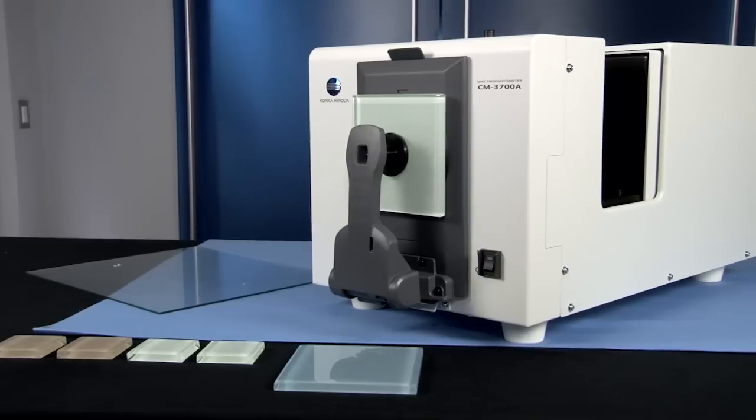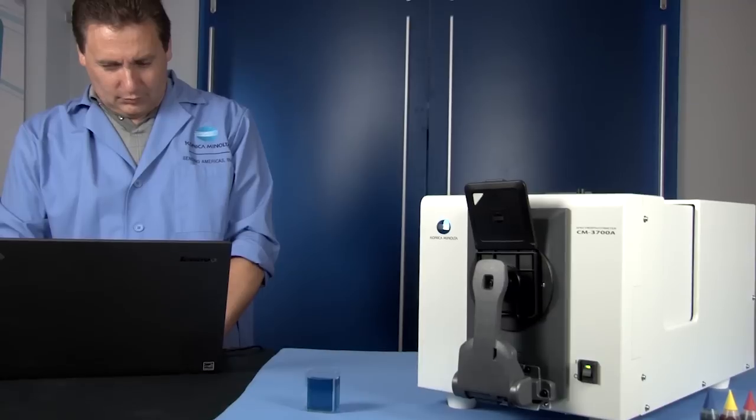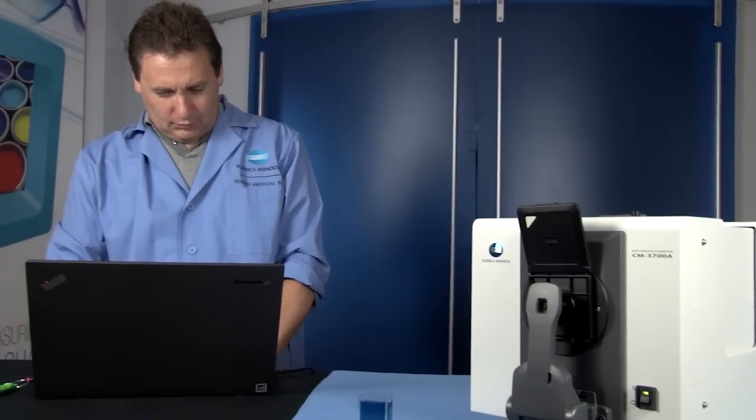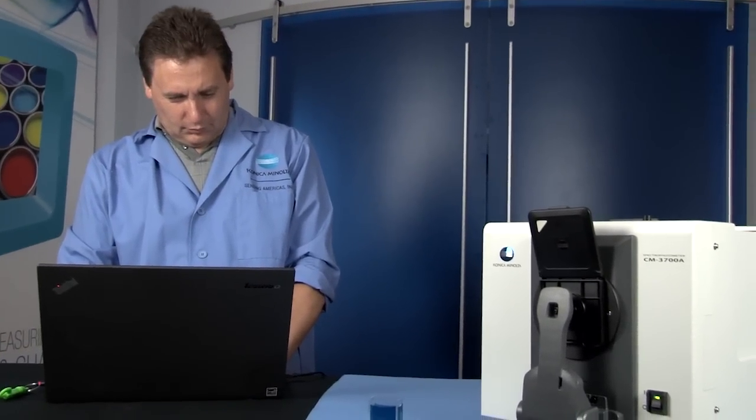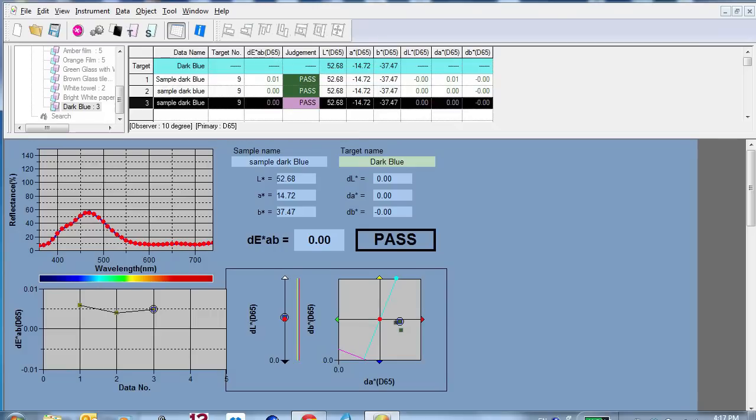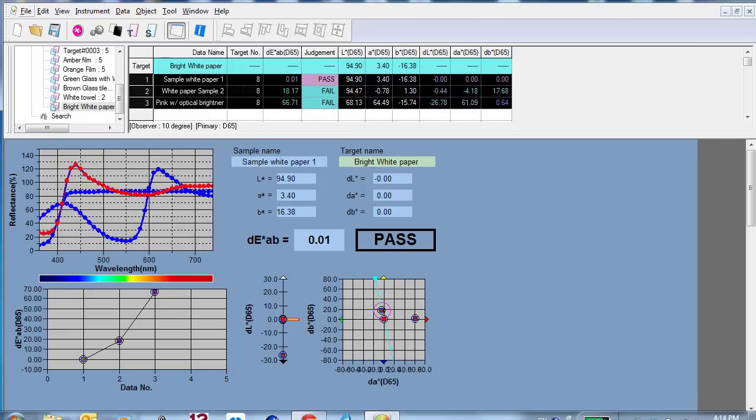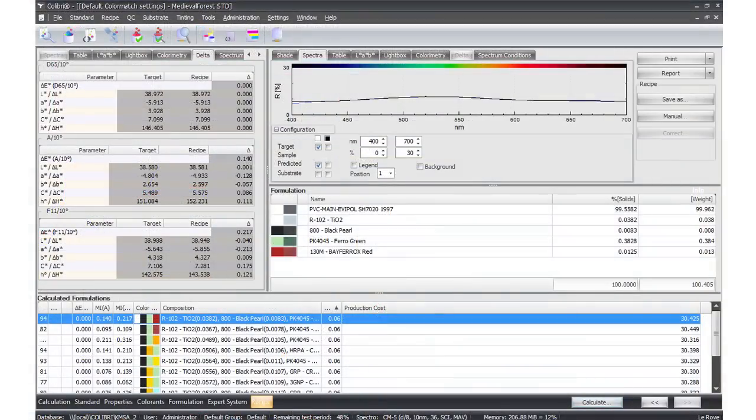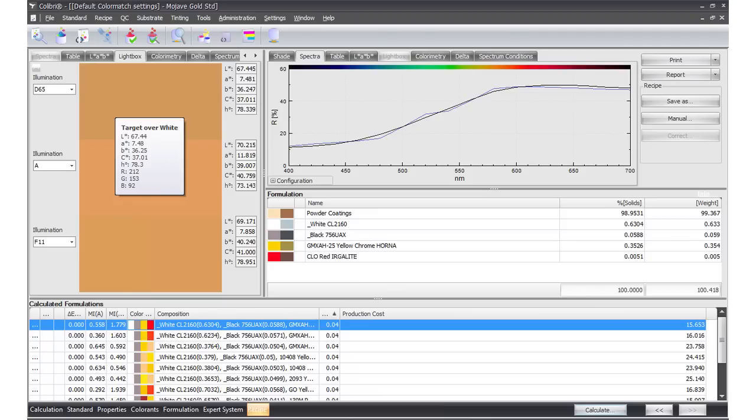The CM3700A spectrophotometer is compatible with SpectraMagic NX software, which records measurement data and provides a more comprehensive color analysis. It is also compatible with Colibri software to formulate color recipes for various applications and share real-time measurements.